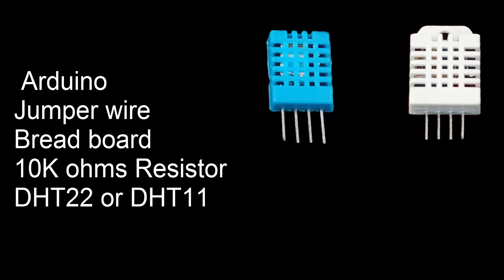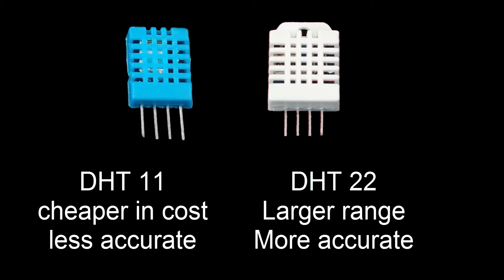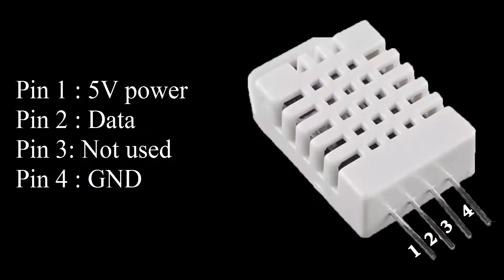You will also need a DST22 sensor. There are two versions of the sensor: DST11 and DST22. DST11 is cheaper in cost and less accurate compared to DST22. DST22 is more accurate and has a larger range compared to DST11. In this tutorial we are using DST22.